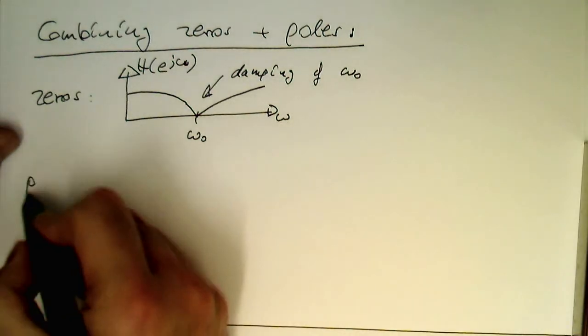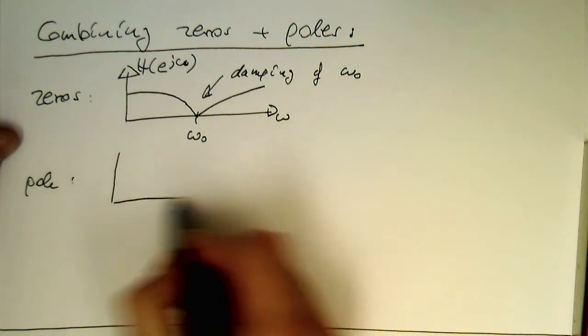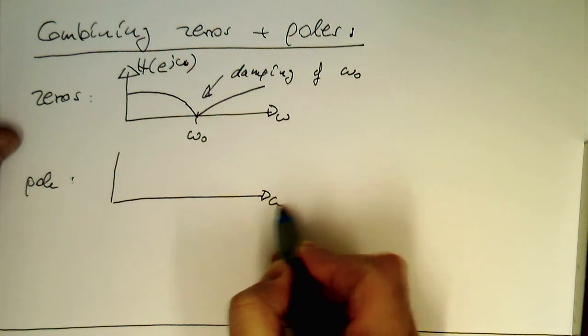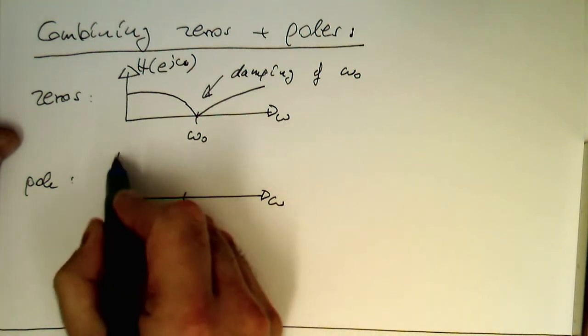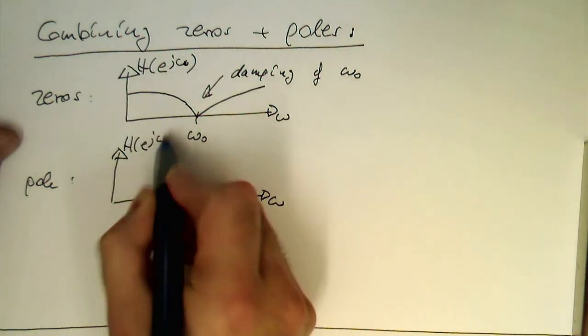Damping of omega zero. And so the pole, on the other hand, does the opposite. So if we have here omega, and again we have got omega zero here. e to j omega.